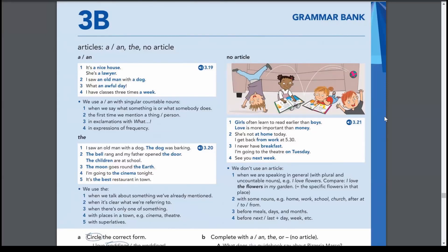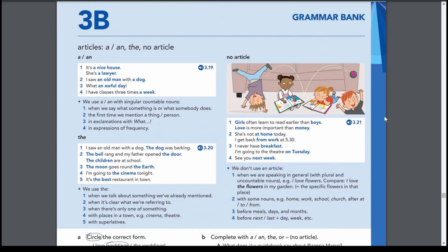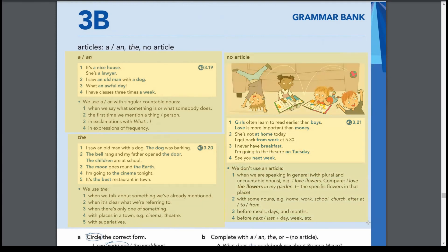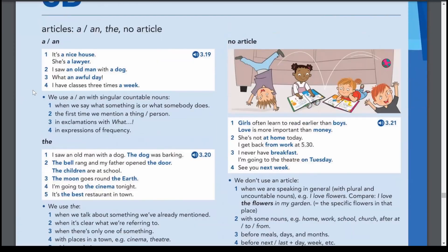This is English File Intermediate level, Grammar page 137. We're going to discuss Grammar 3B, which is about articles. This explanation can be divided into three main sections: how to use the indefinite article 'a' or 'an', how to use 'the' which is the definite article, and cases where we use no article at all.